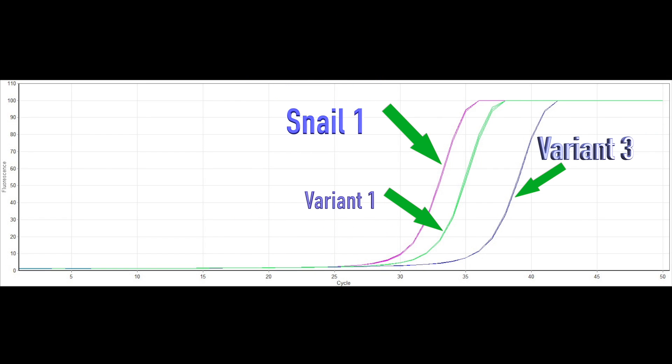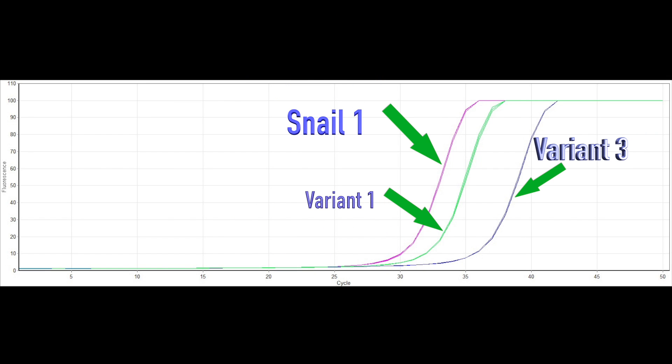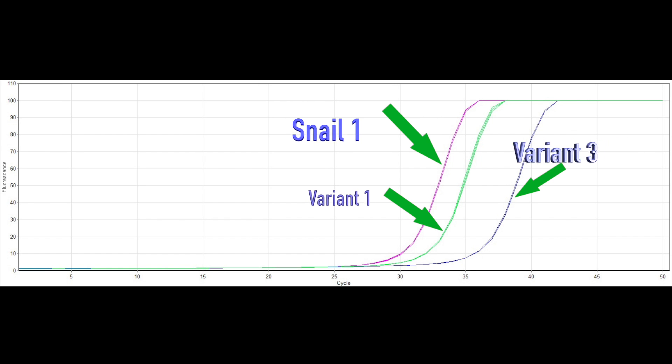I tested gene marker SNAI1. It shows that variant 3 inhibits EMT and variant 1 enhances EMT, especially invasive cell behavior.